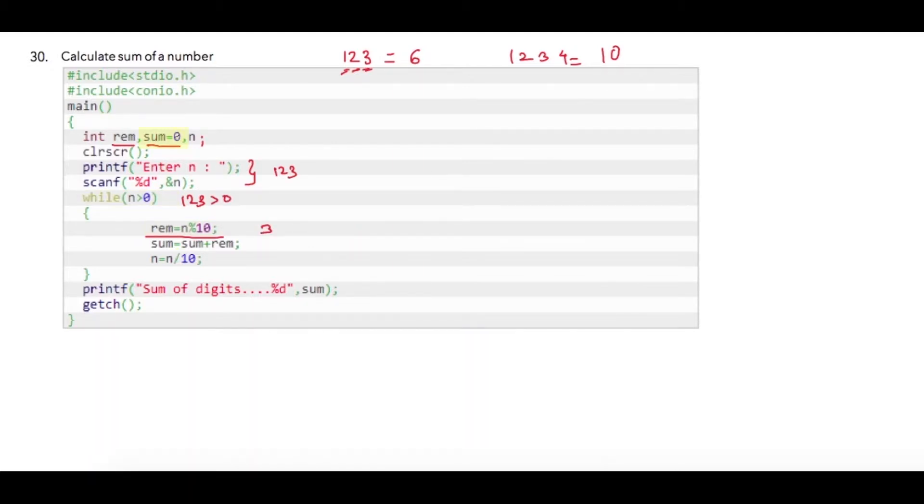Now if you do not initialize sum to zero, sum will be holding a garbage value. Hence at this particular execution, sum will be zero plus remainder 3, so sum will become 3. And then I am dividing n by 10, so my n will become 12.